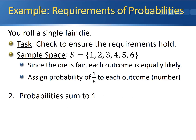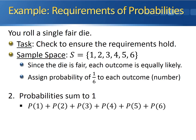Second, we need to make sure that the sum of our probabilities equals 1. We take each possible outcome, look at the probability assigned to it, and add them together. We have six different outcomes, so our sum is the probability of rolling a 1, plus rolling a 2, plus rolling a 3, plus a 4, plus a 5, plus a 6. Since each outcome has a probability of 1/6, we're adding 1/6 together six times: 1/6 + 1/6 + 1/6 + 1/6 + 1/6 + 1/6 gives a sum of 1. So the second requirement also holds for this example.